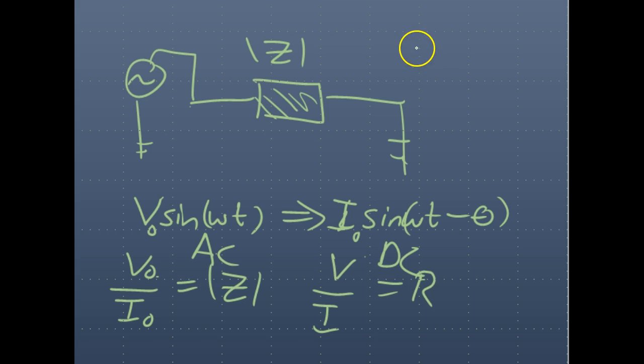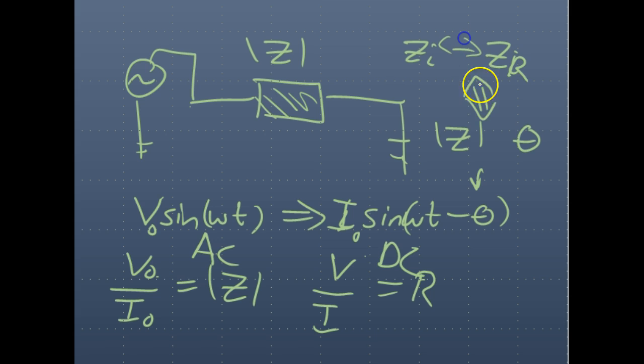You can represent your impedance in real and imaginary contributions, or you can say you have an absolute impedance with a phase. These two representations are equivalent and tell us the same information. From this, you would have to take the tangent to get the phase.